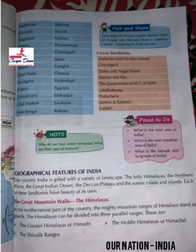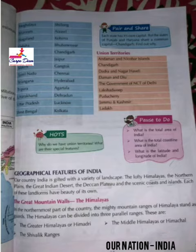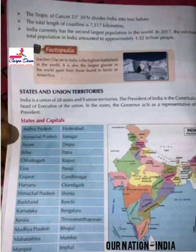The Deccan Plateau is located in the southern part of India. The coastline surrounds the Deccan Plateau. Andaman and Nicobar groups of islands are in the Bay of Bengal, and the Lakshadweep islands are in the Arabian Sea.